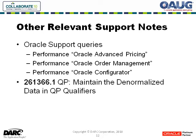One of the things that's been around with pricing since the days of 11i, the very first introduction of Advanced Pricing, was a process called QP Maintain the Denormalized Data. This is a function that's available to run and is recommended to run by Oracle on a normal basis, but has often been a source of mystery as to what it does.